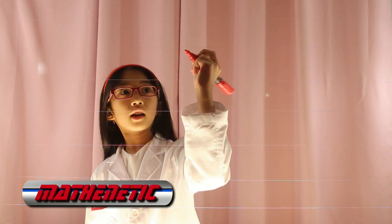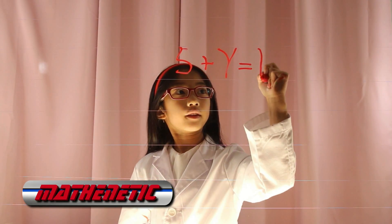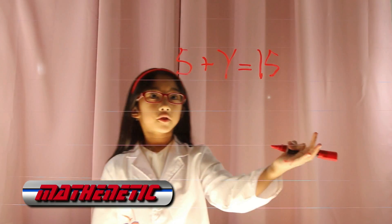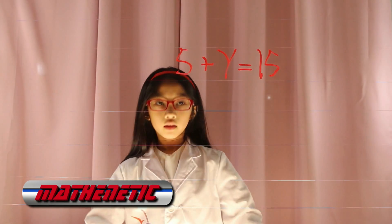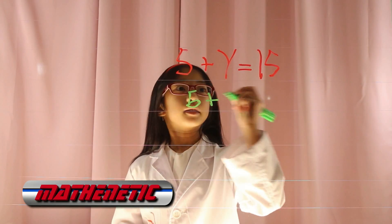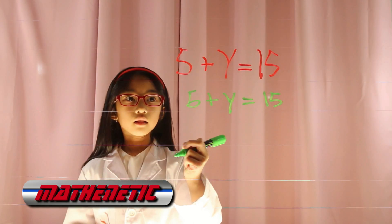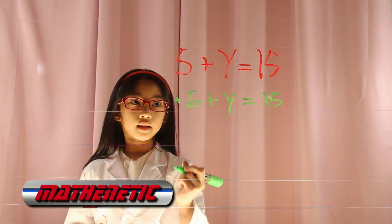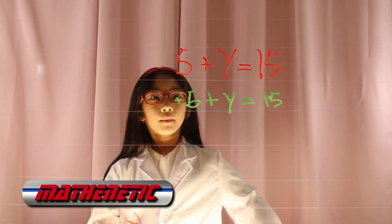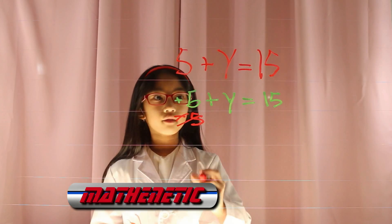Let's review algebra subtraction on both sides of the equation. Say you have the equation 5 plus y equals 15. What's the first thing you need to do? You need to rewrite 5 plus y equals 15. Since this is a positive 5, you need to subtract 5 to cancel out the positive 5. That cancels out.